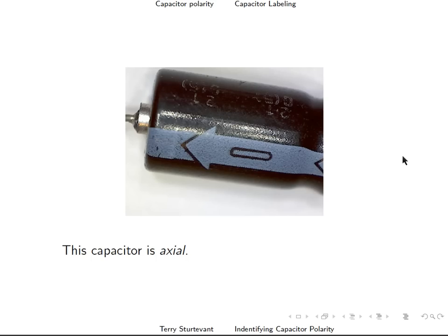Here we have an axial capacitor, which means there's a lead coming out of each end. We have a negative sign with an arrow that points to this lead, meaning that's the negative lead.